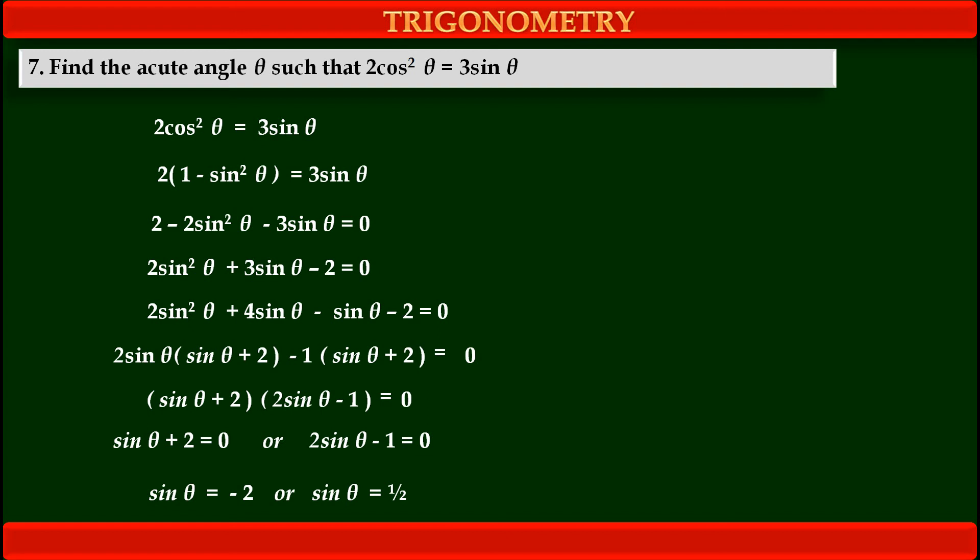Now, we have two values of sinθ. What do we know? sinθ cannot be less than -1. So, the value of sinθ as -2 is not possible because sinθ is always between -1 to 1. Either it is -1 or +1 or between them. So, it can't equal to -2.